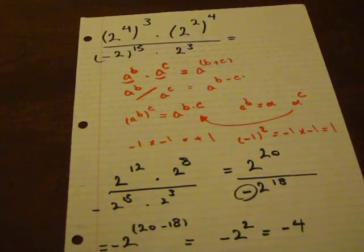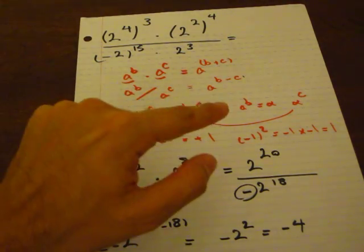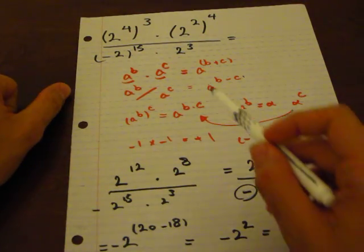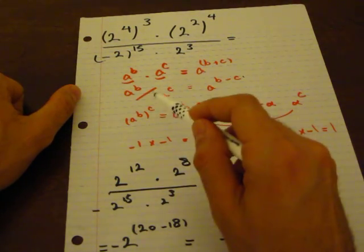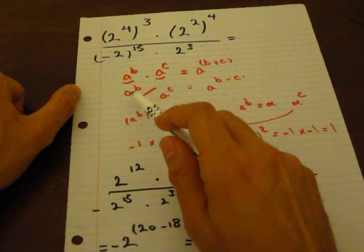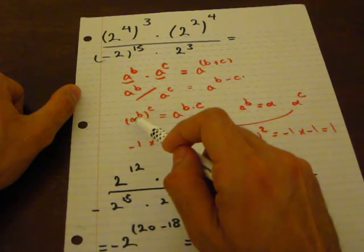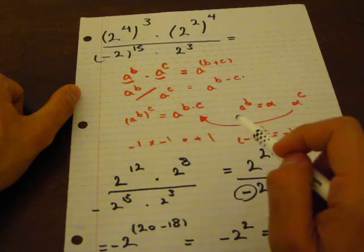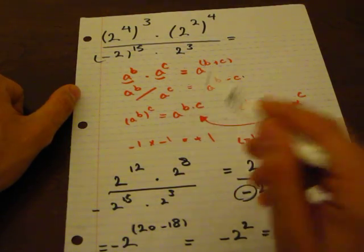Let's go over it one more time quickly. When we are adding the powers, it means they have the same base and are multiplying each other. When we are subtracting the powers, it means they have the same base but we are dividing. And when we have parentheses, we simply multiply the powers and write it as a to the power of b times c.